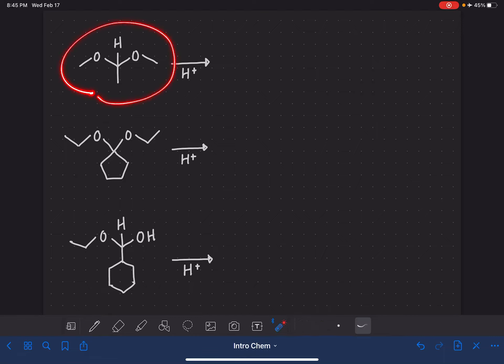Acetals, or also hemiacetals, can be converted to aldehydes or ketones and also alcohol molecules just by using a little bit of acid catalyst.